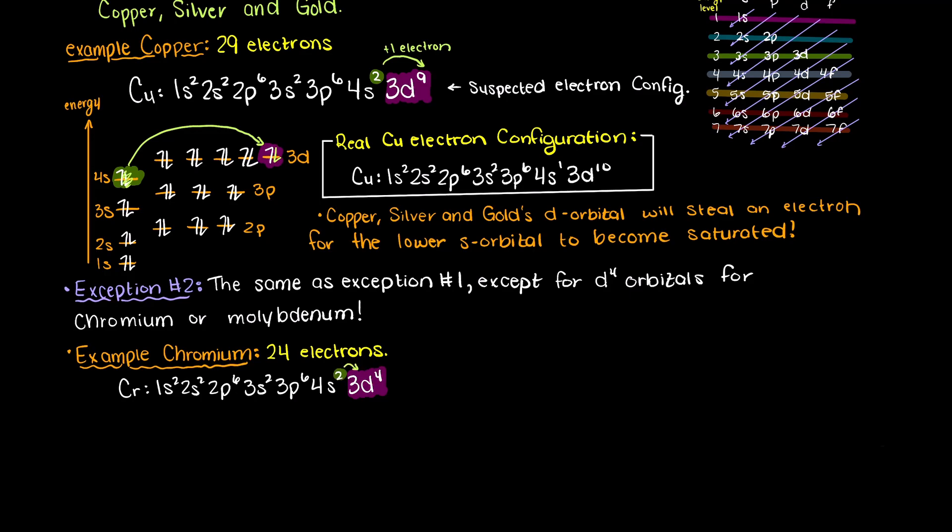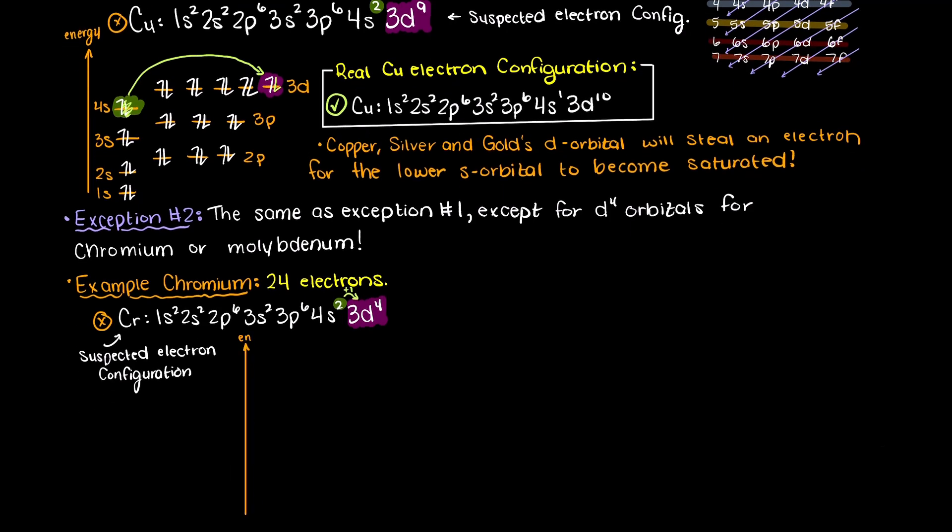However, as we were saying, this d orbital will pull one of the electrons from the s orbital into the d orbital to half saturate it. This is a lot more stable for the electron configuration, and in both these scenarios for chromium and molybdenum, this is a more stable electron configuration.